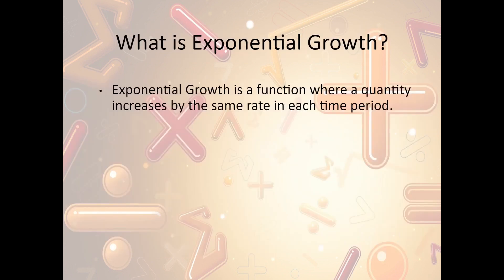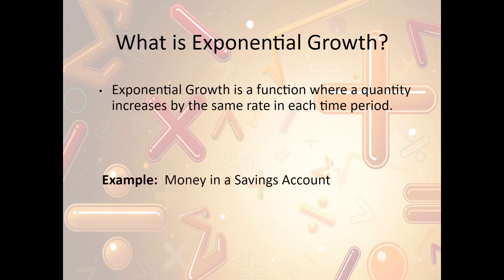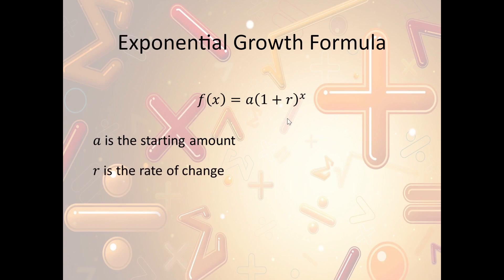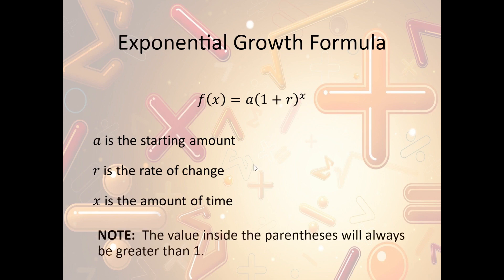Now, what is exponential growth? Exponential growth is a function where a quantity increases by the same rate in each time period. For example, money in a savings account — I put money into my savings account, my money increases with interest, and it goes up exponentially. The exponential growth formula is f(x) = a · (1 + r)ˣ, where a is our starting amount, r is the rate of change or interest rate, and x is the amount of time. Notice the value inside the parentheses will always be greater than 1 with exponential growth, because we're adding 1 plus some positive number.